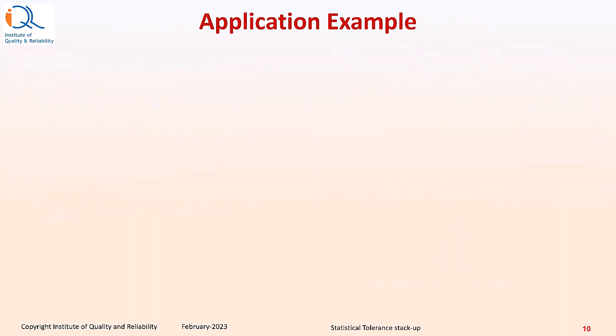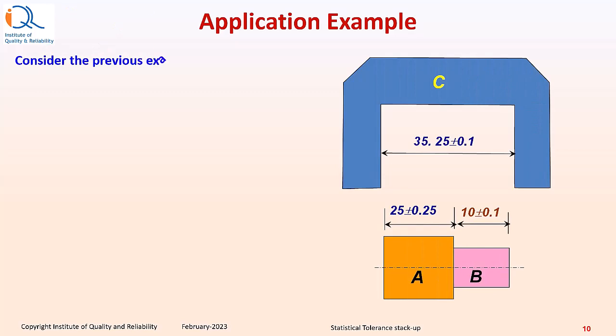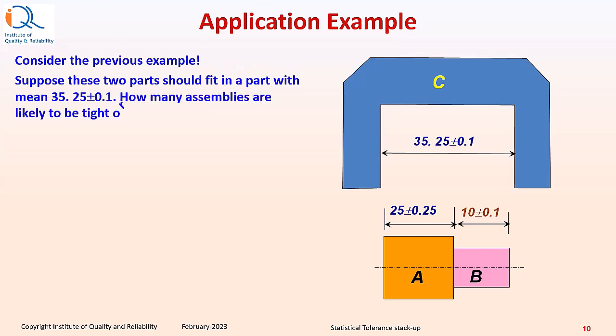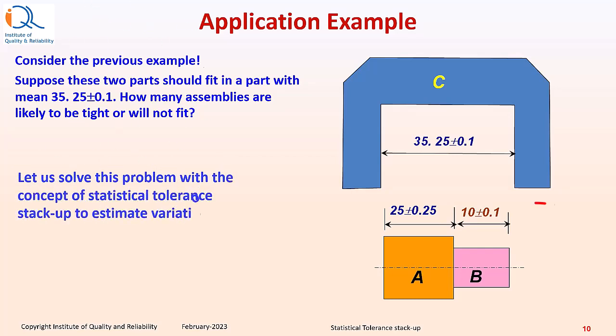Let us now see an application example of statistical tolerance stack-up. We will consider the previous example. Suppose these two parts should fit in a part with mean 35.25 plus or minus 0.1. How many assemblies are likely to be tight or will not fit? Let us solve this problem with the concept of statistical tolerance stack-up to estimate variation in gap G.